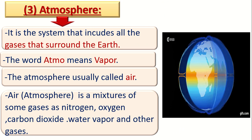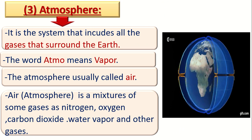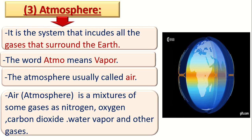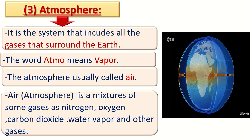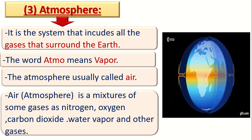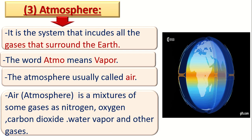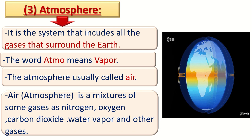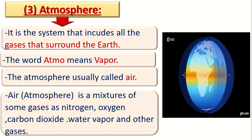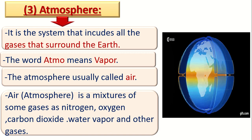Now let's talk about the atmosphere. In the atmosphere system, we have a mixture of gases surrounding the Earth: nitrogen, oxygen, carbon dioxide, and water vapor. The word 'atmo' means vapor. The atmosphere layer is usually called air. So we have three key words: geo means Earth, hydro means water, and atmo means vapor.